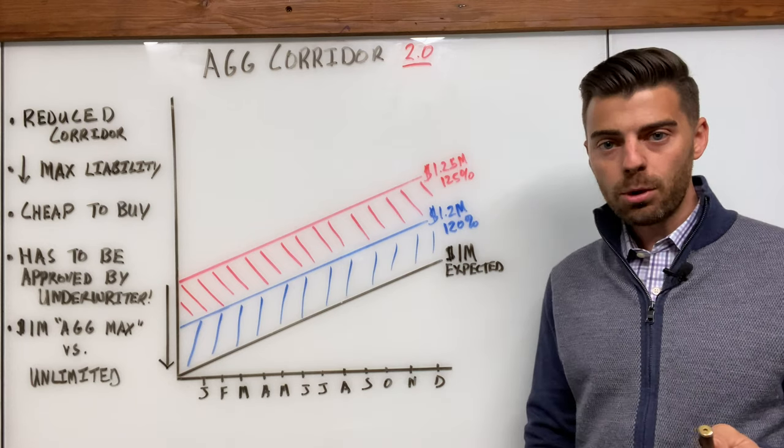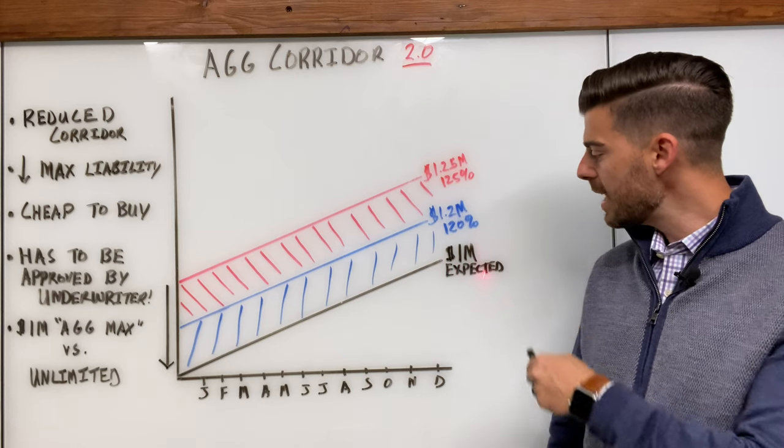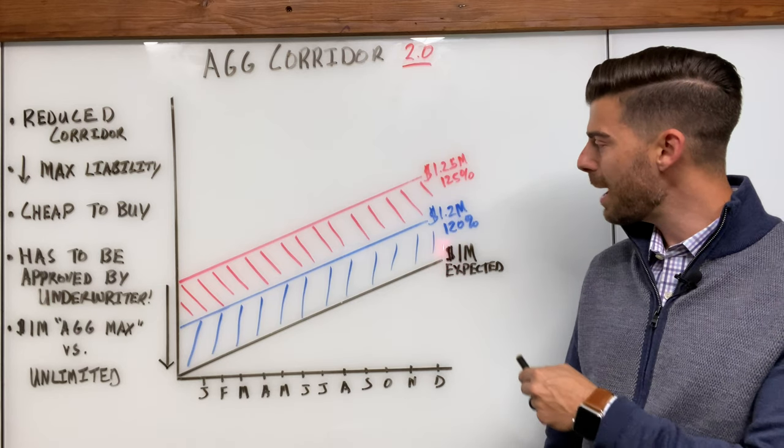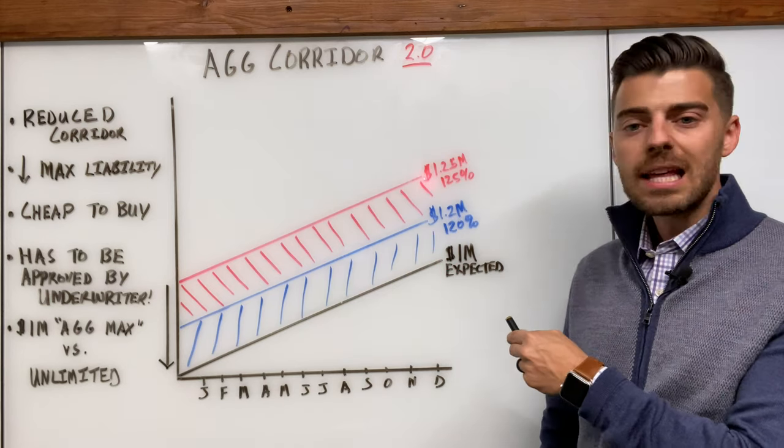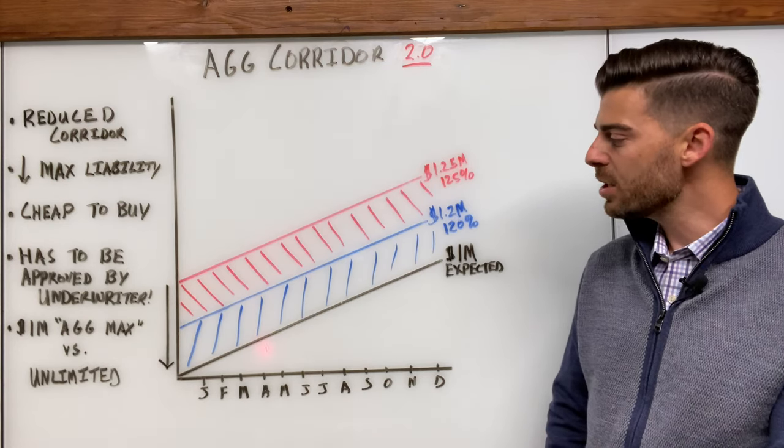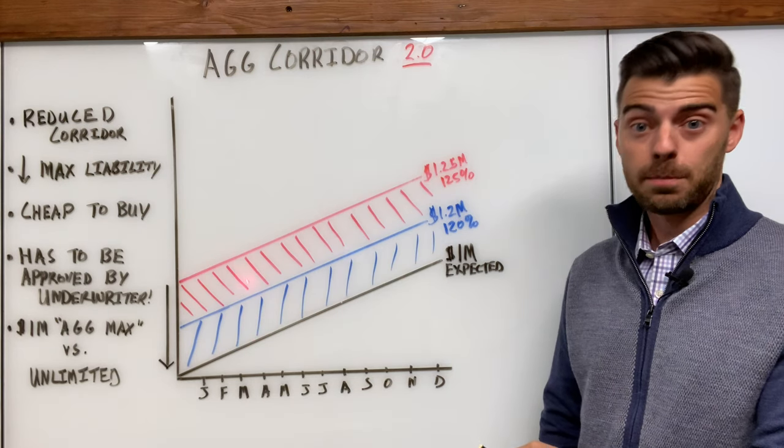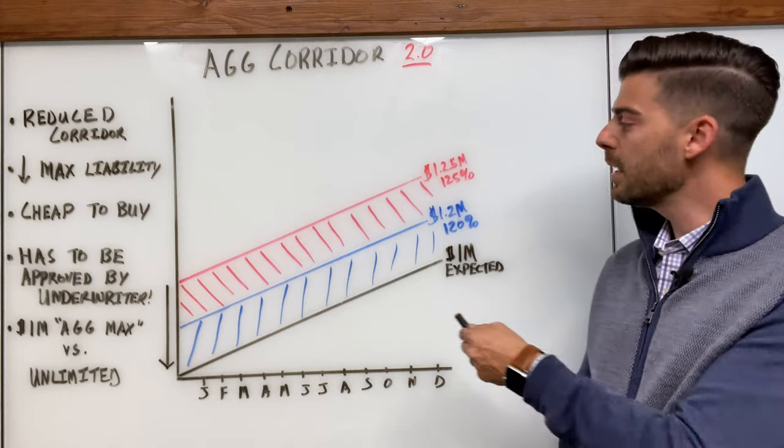So, as a quick refresher, the corridor, 125% on top of a million dollars of expected adds $250,000 to your attachment point. You now have a 25% buffer which is notated, which is pointed out, which you can see in red.